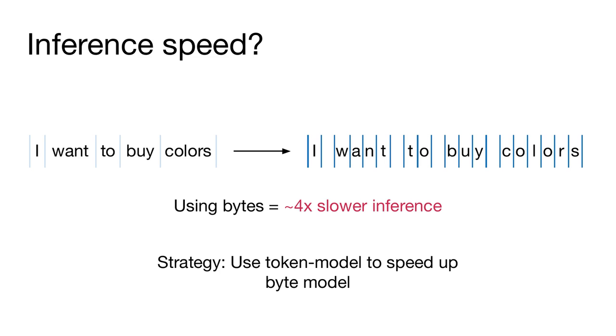So to get around this issue, we're going to use a strategy where we use a token-level model to try to speed up the inference of our byte-level model in practice. We're still going to get generations that basically come from the byte-level model, but we'll see that the token-level model gives us a strong benefit in decoding speed.